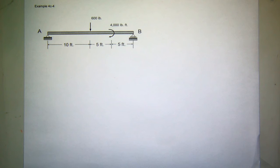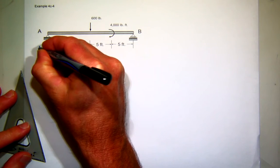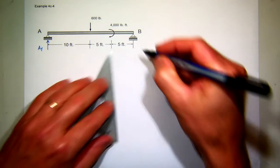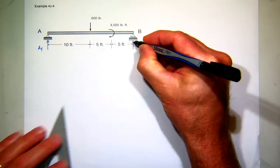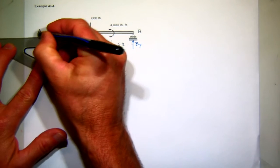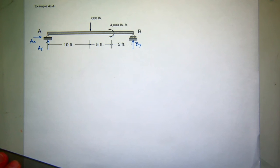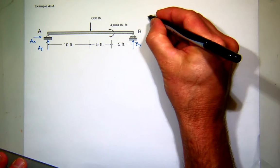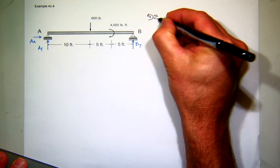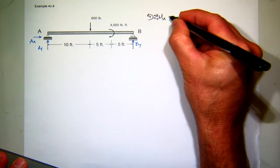So the first thing I'm going to do is find my reactions. We have a pin at A, so I'll assume I have a reaction in the Y direction, and here at B. Technically, I have one in the X direction, but you notice that there are no forces in the X direction, so that's going to be zero. So I'm going to go over here to the side, and let's find those reactions. I'll sum moments about A, use right-hand rule for my sign convention.